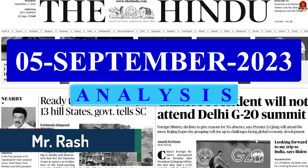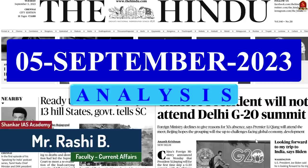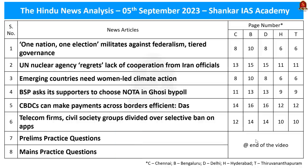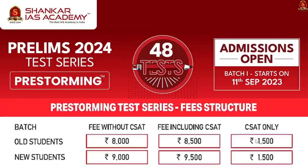Good evening, aspirants. Welcome to daily news analysis by Shankar IAS Academy. Today's date is 5th September 2023. Displayed here are the list of topics we are going to see today. Before we get into the discussion, I have an important announcement. Shankar IAS Academy's pre-storming test series is about to begin on 11th September. The first test will start from 18th September. Other details regarding the test series are given here. Now, let us get into the discussion.